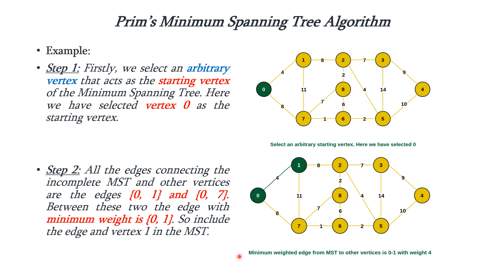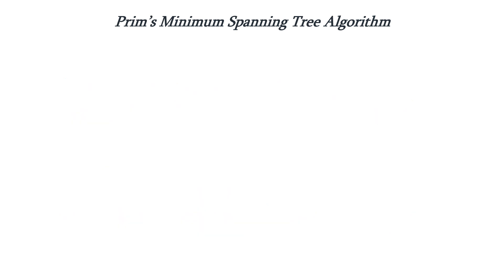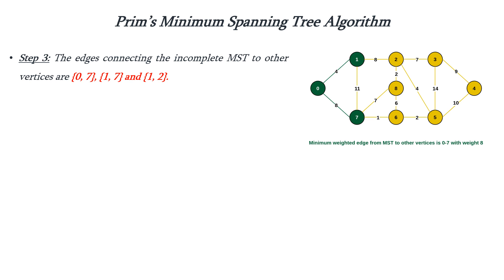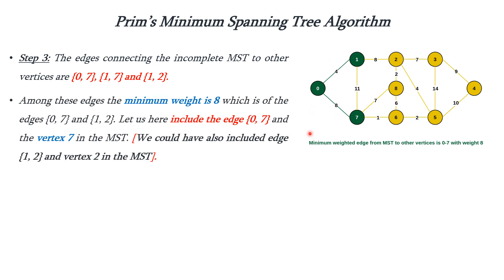After this we have to check the possible vertices which can be connected to 0 and 1. For 0 we can consider 7; for 1 we can consider 7 and 2. Among these 3 possibilities, the minimum weight is 8, but both 0-7 and 1-2 have the same weight. We can either consider 0-7 or 1-2. In this example we are considering edge 0 to 7 and including it into the MST. If we had considered 1 and 2 it would also be correct but would create a different minimum spanning tree.